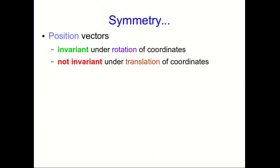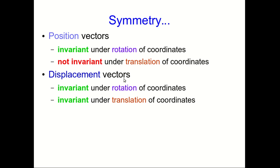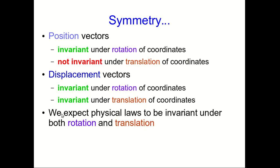So given that, I just want to quickly point out that this is a symmetry. Notice that position vectors are invariant under rotation of our coordinates, that's a symmetry, but they are not invariant under translation of the coordinates. On the other hand, displacement vectors are invariant under both rotation and translation of our coordinate system. Now, one thing to note is that we expect our physical laws to be invariant under both rotation and translation. It would be rather strange if our physical law had to be rewritten every time we choose a new coordinate system.